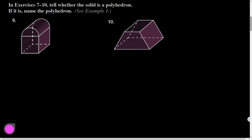So it says tell whether the solid is a polyhedron. So a polyhedron is made up of polygonal faces, all right? Things that have edges, things like that. So this one, yes, is a polyhedron.